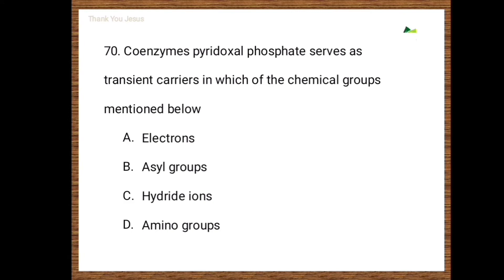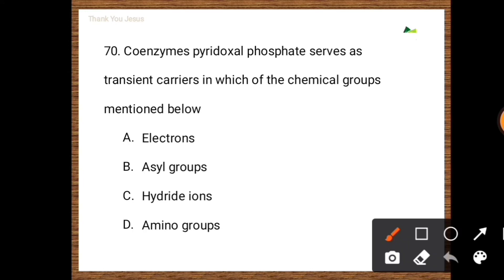Next question: Coenzyme pyridoxal phosphate serves as a transient carrier of which of the following chemical groups? Options are electrons, acyl groups, hydride groups, amino groups. The correct option is amino groups.